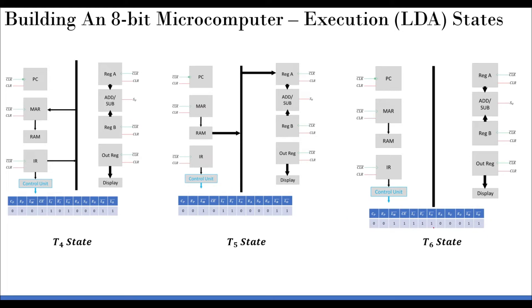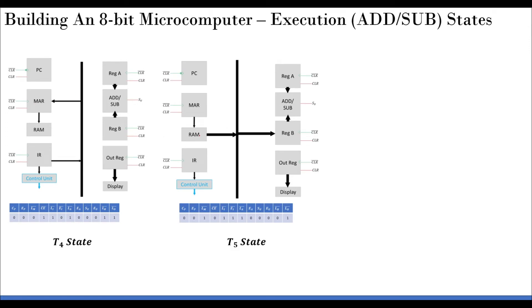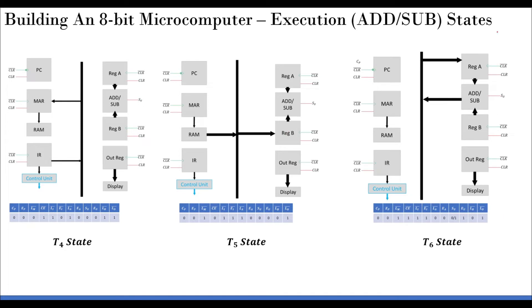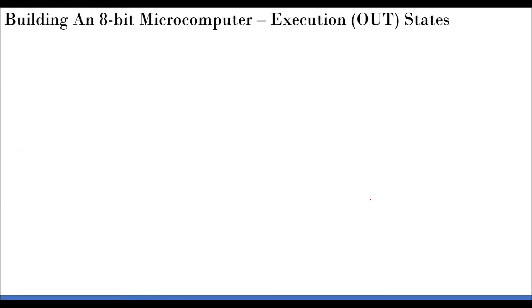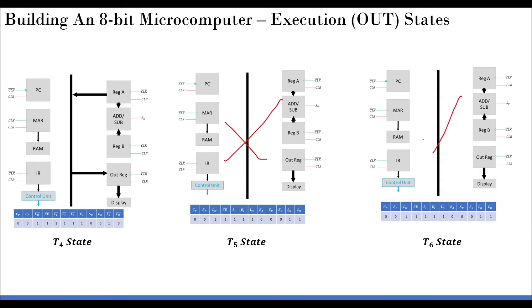For the ADD instruction, similarly: first the data address goes to the memory address register (T4), then that data is stored in register B (T5), and then the addition result is stored back in register A (accumulator) in T6. For the OUT instruction, only one connection is needed — the relevant signal is set and the other clock cycles T5 and T6 are idle for that operation.